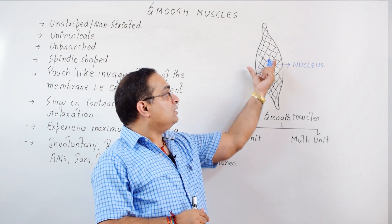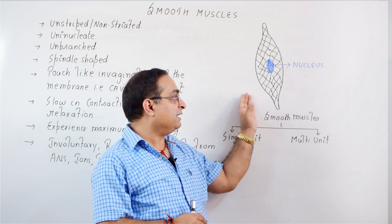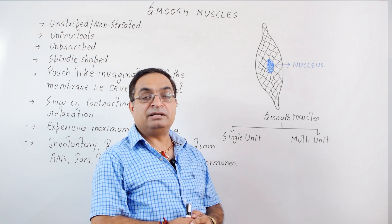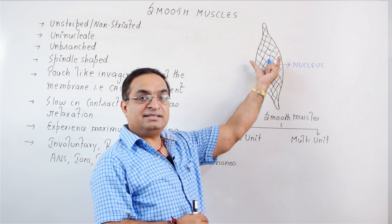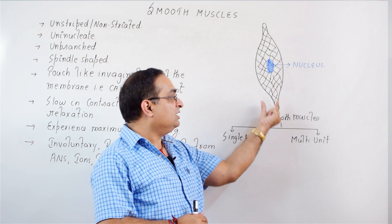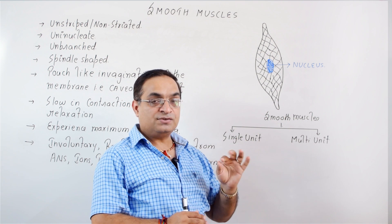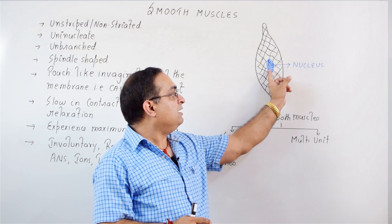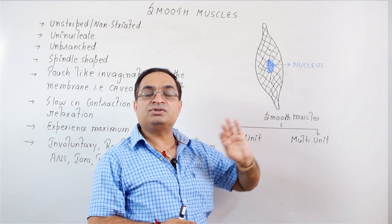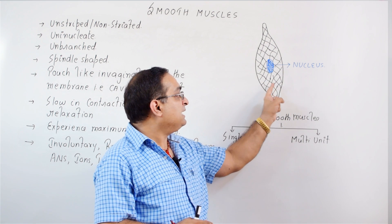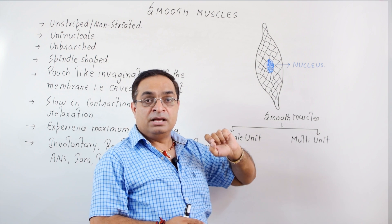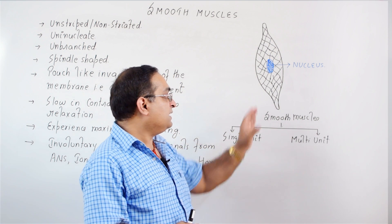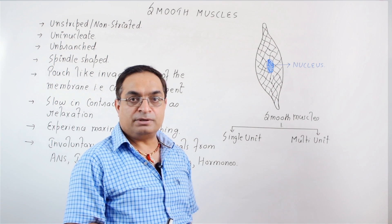You can see the structure of a smooth muscle fiber in this diagram. Smooth muscle fibers are spindle-shaped — thick at the center and thin at the ends. These are uninucleate; they have a single large centrally placed nucleus. The pattern of myosin and actin filaments visible in this diagram is not arranged to form sarcomeres.